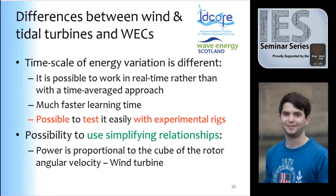A heads-up on the comparison between wind, tidal, and wave energy: in wave energy you need to look at time-average quantities, which is the main difficulty. With wind energy that's not a problem, so convergence is so much faster that you can actually experimentally test it — the control of a wind farm with reinforcement learning, neural networks, or support vector machines is totally feasible, even on experimental timescales. You can also use simplifying relationships which make everything easier. I thought this applied to tidal turbines as well, but Anupas told me that with turbulence and waves that is not the case — you still need the time-average approach.